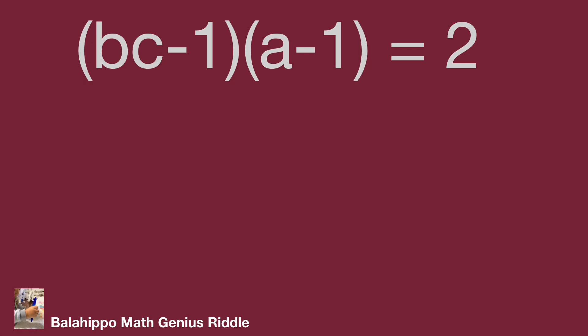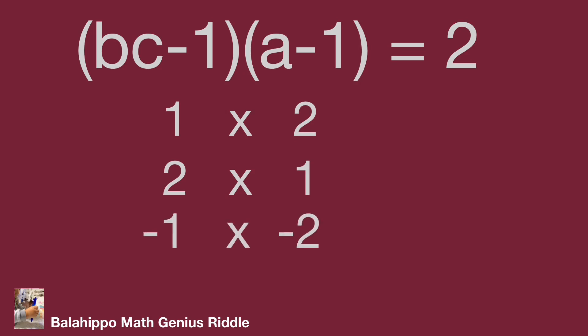Factorize as quantity (bc plus 1) times quantity (a plus 1) equals 2. While two quantities multiplied become 2 and abc are positive integers, (bc plus 1) could equal 1 times (a plus 1) equals 2, or (bc plus 1) equals 2 times (a plus 1) equals 1. And the negative group: minus 1 times minus 2, and minus 2 times minus 1.